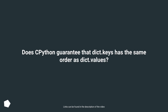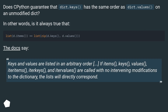Does Python guarantee that dict.keys has the same order as dict.values on an unmodified dict?